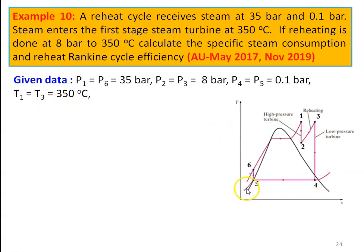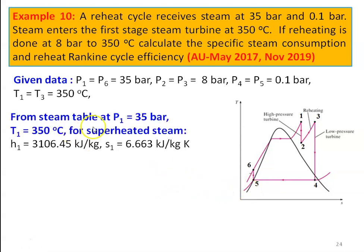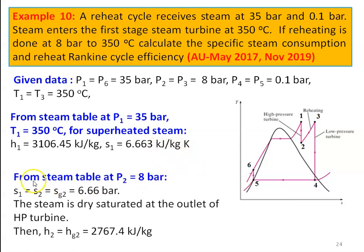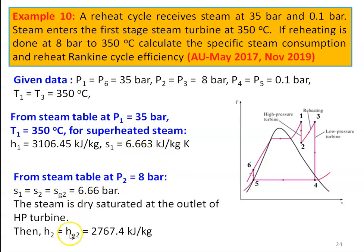From the steam table at P1 = 35 bar and T1 = 350°C for superheated steam: H1 = 3106.45 kJ/kg, S1 = 6.663 kJ/kg·K. From the steam table at P2 = 8 bar, S1 = S2 = Sg2 = 6.663 ≈ 6.66, confirming the steam is dry saturated at the outlet of the HP turbine. So H2 = Hg2 = 2767.4 kJ/kg. From the steam table at P3 = 8 bar and T3 = 350°C for superheated steam: H3 = 3162.4 kJ/kg, S3 = 7.411 kJ/kg·K.